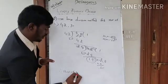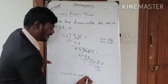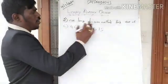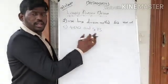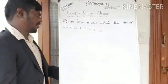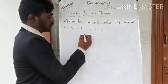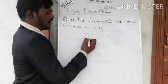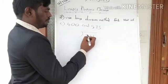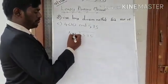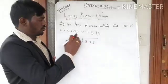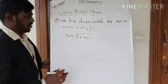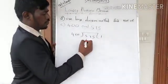Therefore HCF of 42 and 70 is equal to 14. Third question: using the long division method, find HCF of 400 and 575. The bigger number is 575, so write 575 inside as the dividend and 400 as the divisor.